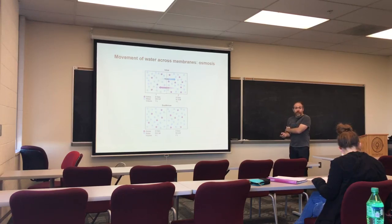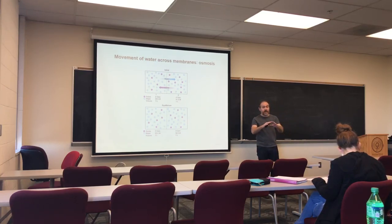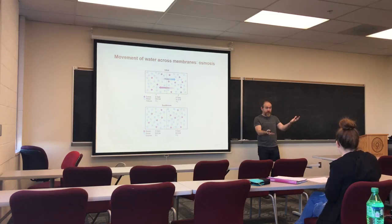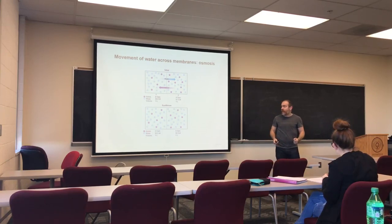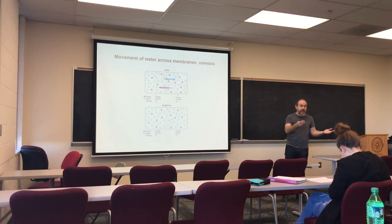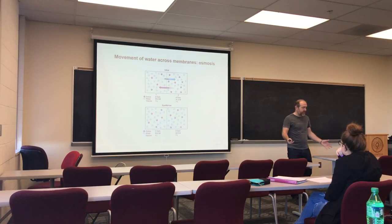When you have a solution of water plus different kinds of solutes, you have a concentration of solutes and automatically a concentration of water. Whenever you increase the concentration of solutes, you automatically decrease the concentration of water, and vice versa. Water moves from high concentration to low concentration until equilibrium is reached, at which point concentrations of solutes and water are the same in both compartments.